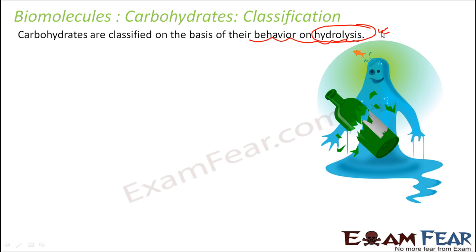There are two important processes here. One is where you make complex structures from simple structures, and one is where you break down complex structures to form simpler ones. In hydrolysis, bigger carbohydrates are broken down to give smaller carbohydrates — we add water. In condensation, water is pulled out and a bond is formed, giving rise to a bigger carbohydrate.